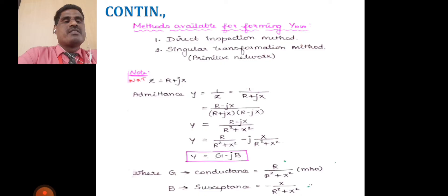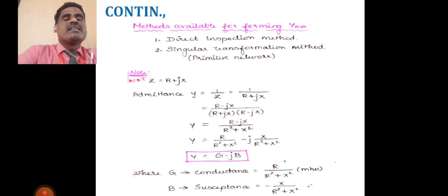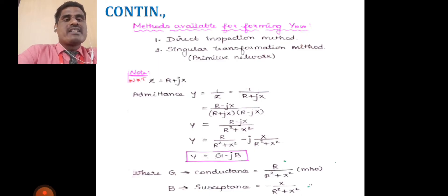For the direct inspection method, based on the different power system network, the different nodes connected at various points allow us to easily form equations and solve them — this is the direct inspection method. The singular transformation method means the diagonal matrix elements and the mutual admittance matrix elements are separately calculated — this is called the singular transformation method.